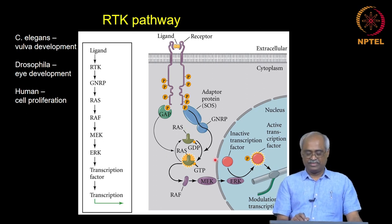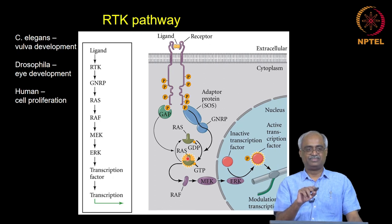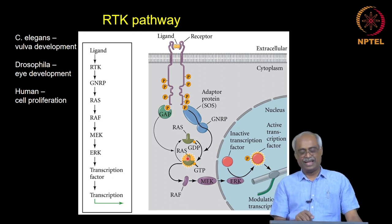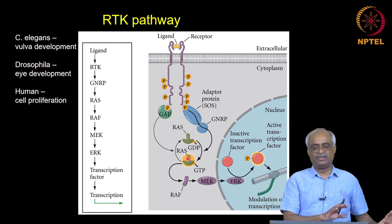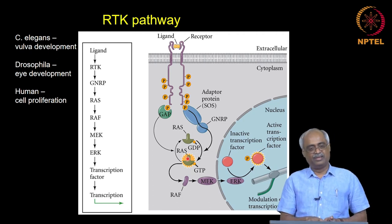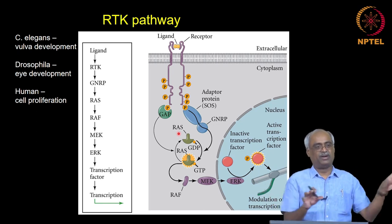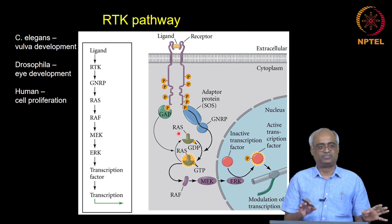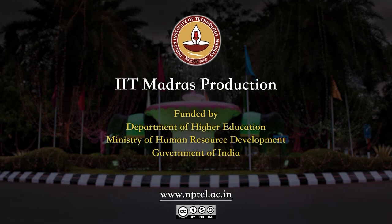RAS belongs to a group of molecules called small GTPases — we previously learned about Rho, which is involved in actin cytoskeleton rearrangement. RAS participates in this signaling pathway; both Rho and RAS come from a common ancestor group of small GTPases. We will stop here and continue with further signaling pathways in the next class.